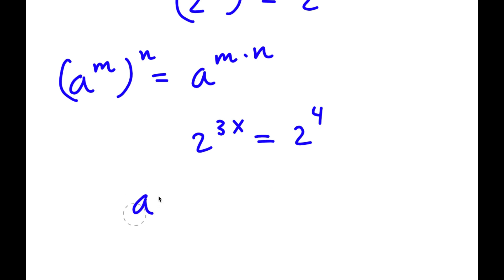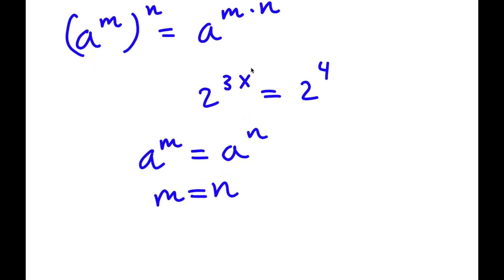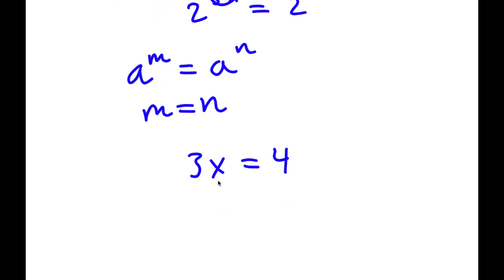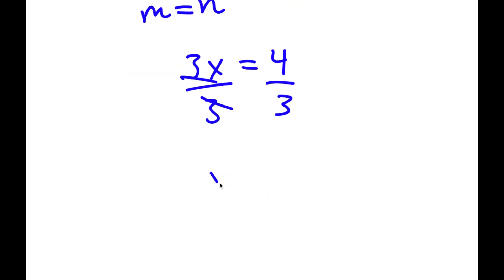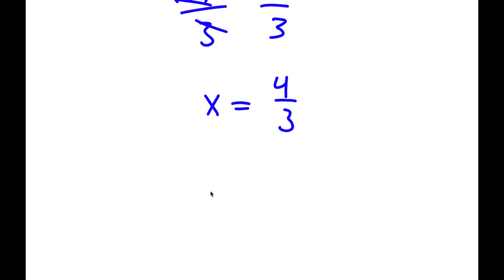Now if I have something in the form a to the power of m is equal to a to the power of n, this is the same thing as m is equal to n. So these two exponents are equal to each other, meaning 3x is equal to 4. To solve this, I divide both sides by 3, and now I have x is equal to 4 over 3, which is the same thing as 1 and 1 third.